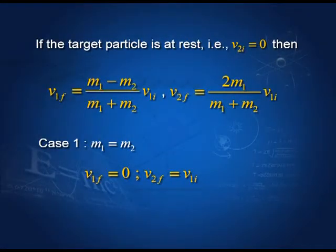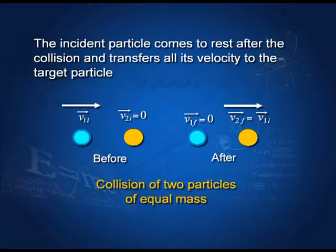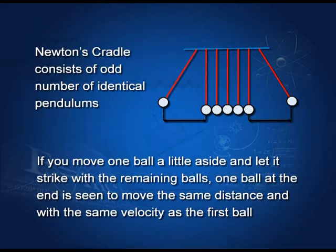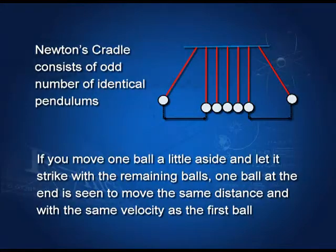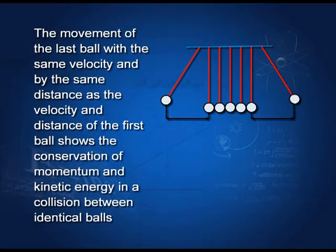Case 1: the two colliding masses are equal. Before collision: particle 1 has velocity v₁ᵢ, the target v₂ᵢ = 0. We find that v₁f becomes 0 and v₂f becomes v₁ᵢ. You can see this phenomenon in many science parks — for example, in the NCRT science park — in a machine called Newton's cradle. It consists of an odd number of pendulums and demonstrates conservation of momentum: swing one pendulum and the end one goes off by the same amount.